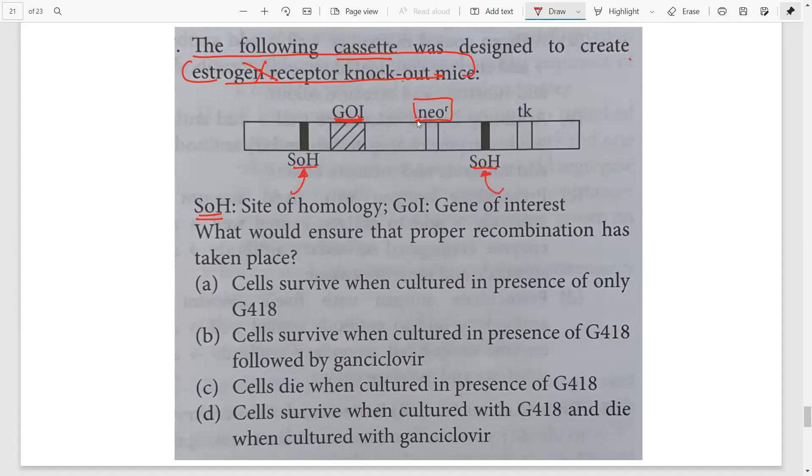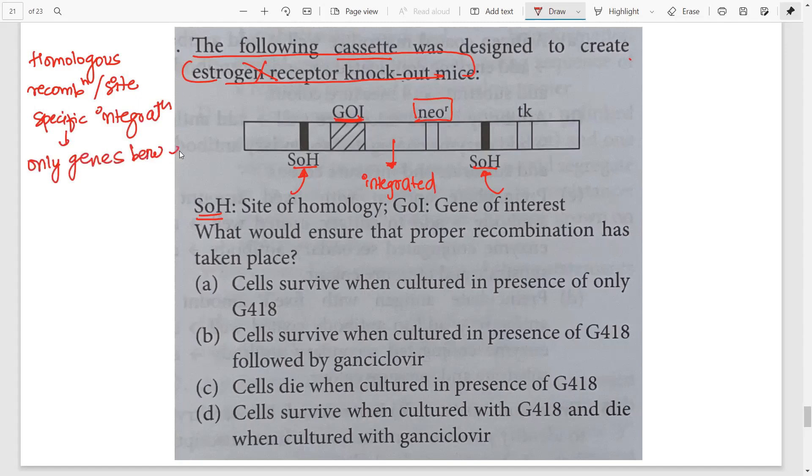And SOH as they have said in the key down below is the site of homologous recombination. So recombination will happen and this particular gene that is in between will get integrated. We have discussed it previously. Whatever is between the homologous region, only that is going to get integrated if it is a homologous recombination. So if it is site specific integration, then only genes between the site of homology or the homologous sequences will be integrated.